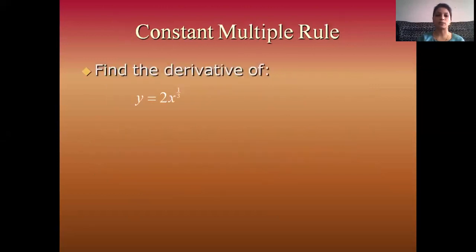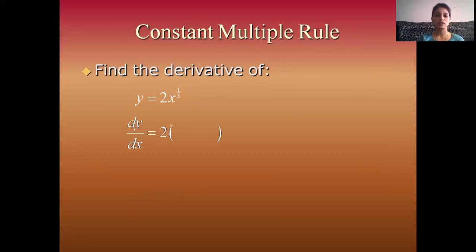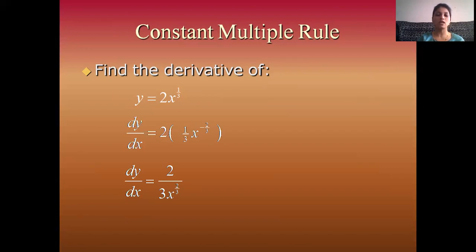Example on the constant multiple rule. Find the derivative of y = 2x^(1/3). Apply the derivative on both sides. 2 is the constant, so take 2 outside and apply the derivative on x^(1/3). Using the power rule, where N = 1/3, the derivative of x^(1/3) is (1/3)x^(−2/3). Since the power is negative, x^(−2/3) moves to the denominator, so dy/dx = 2/(3x^(2/3)).